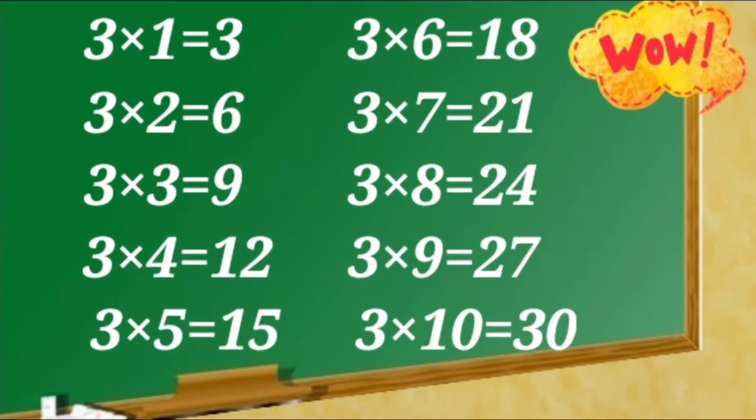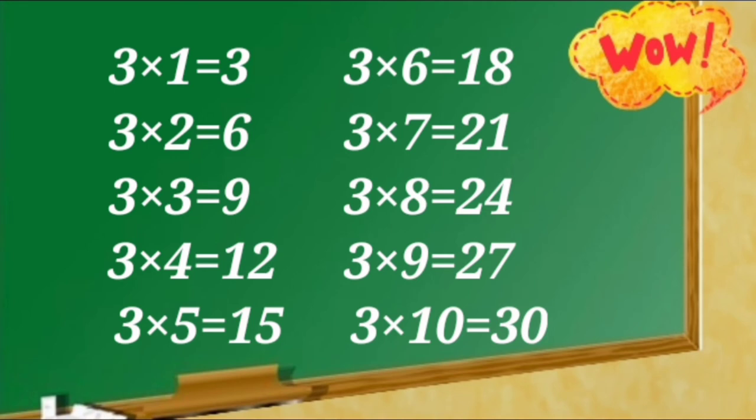3 ones are 3, 3 twos are 6, 3 threes are 9, 3 fours are 12, 3 fives are 15, 3 sixes are 18, 3 sevens are 21, 3 eights are 24, 3 nines are 27, 3 tens are 30.